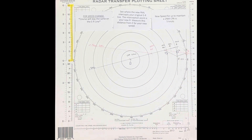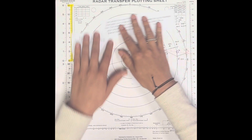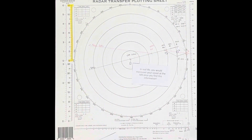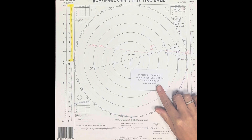And that is how you solve for a speed or course change on a radar transfer plotting sheet. In real life, you would maneuver your vessel at your MX maneuvering point once you find this information.